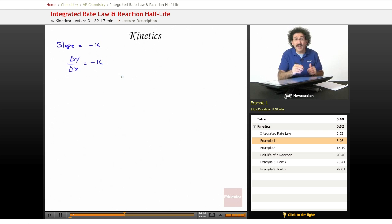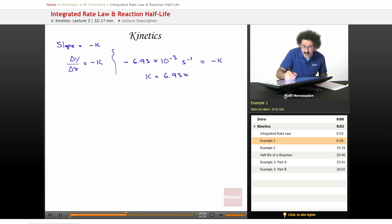When we take a couple of points on the graph that we just did in the previous slide, we end up with the following. We end up with -6.93 times 10 to the -3, and the unit is per second, equals minus k. Slope equals minus k. Negative equals negative. So k, the rate constant, equals 6.93 times 10 to the -3 per second. That is our rate constant.